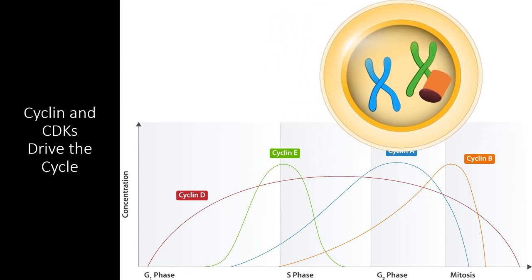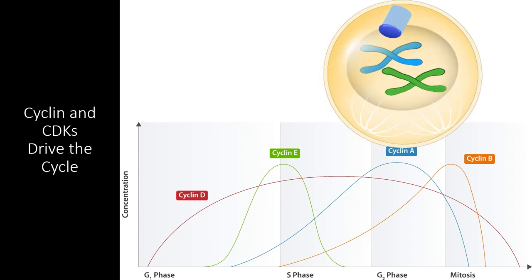As the cell enters G2 phase, cyclin A peaks. Cyclin A and the CDK specific to cyclin A prepare the cell for cell division and start to degrade cyclin D, the cyclin that has been activating the tumor repressor gene this whole time. With this cyclin removed, mitosis can begin.